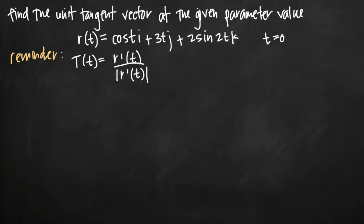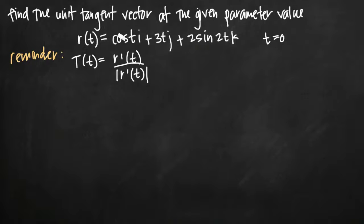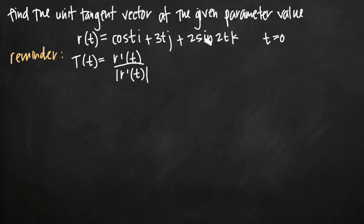Today we're going to be talking about how to find the unit tangent vector at the given value of the parameter. In this particular problem we've been given the vector equation r(t), where r is equal to cosine of t times i plus 3t times j plus 2 sine of 2t times k. We've been asked to find the unit tangent vector at the point where the value of the parameter is equal to zero.